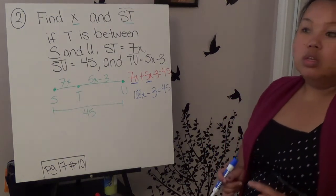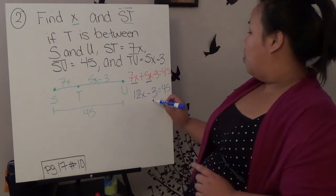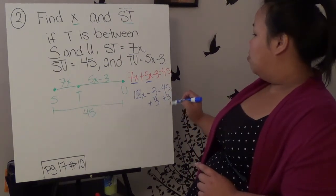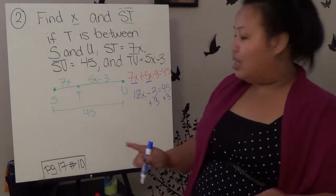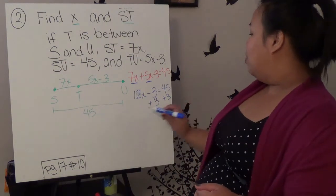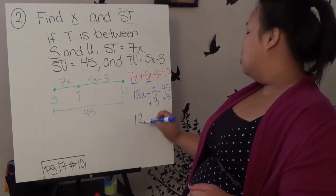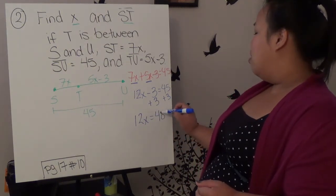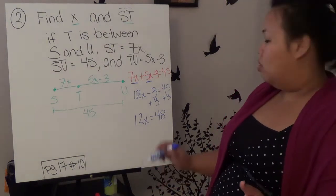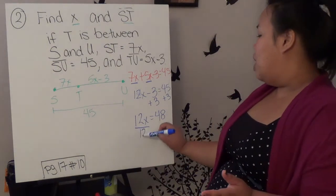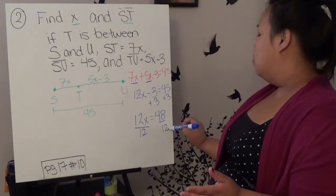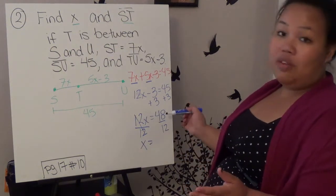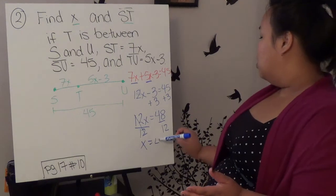So here, we add 3 to both sides. Remember, the whole point is to isolate X, X by itself. So we add 3 to both sides. We have 12X. 45 plus 3 is 48. And then, our last step is to divide both sides by 12. Cross out. X equals 48 divided by 12 is 4.